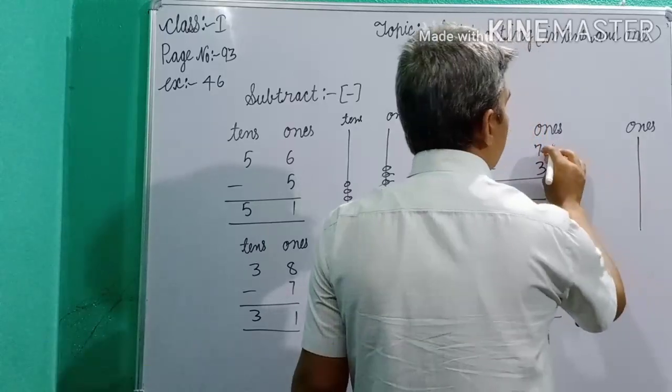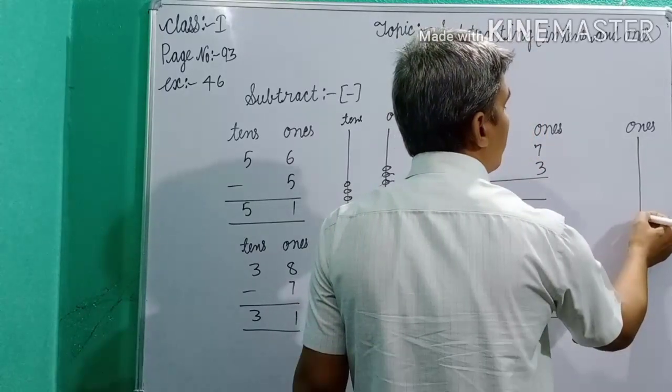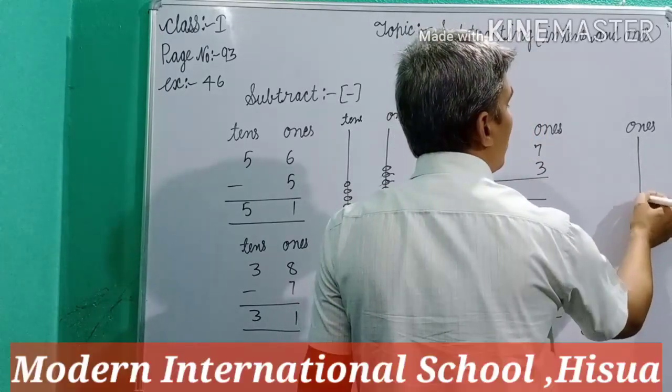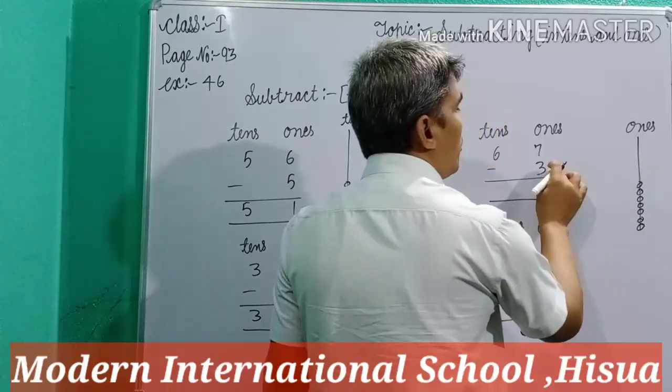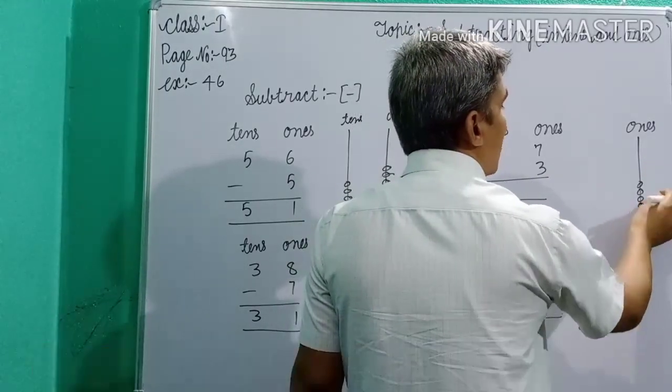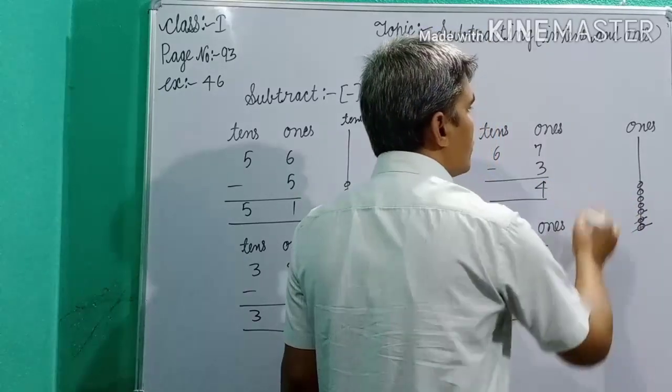Make bits for ones place digit. Here, 7. So, make 7 bits: 1, 2, 3, 4, 5, 6, 7. In the below 3, 3 bits cancel. How many bits left? 4 bits left. Here, 4 write down.